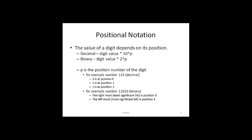In the positional notation system, the value of a digit depends on the position of that digit in the number. For example, in the decimal system the value of a digit would be the digit value times 10 to the positional value, whereas in binary it would be the digit value times 2 to the positional value. Let us look at some examples.